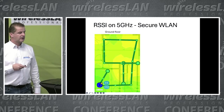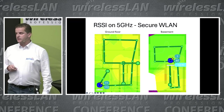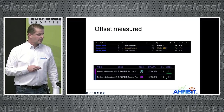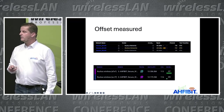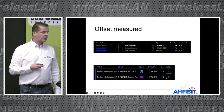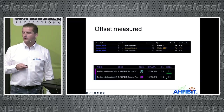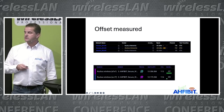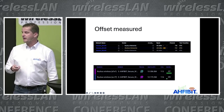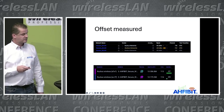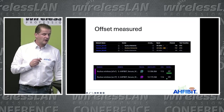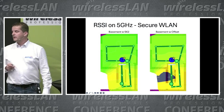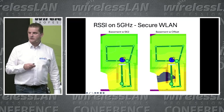I ran a survey of the ground floor and basement. Looking at primary signal strength on 5 GHz, I noticed an offset: my MacBook measured minus 65 dBm on channel 112 while the Sidekick measured minus 57 dBm — an 8 dBm offset. After applying the dBm offset, I could see I had a problem with primary signal strength on the stairs.